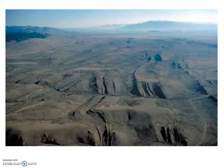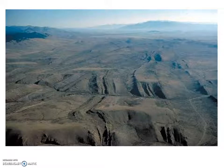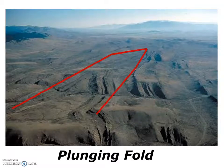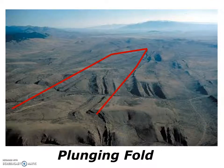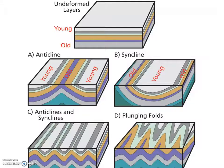Here in this image we see an eroded surface of the earth. Note the outcrop pattern — would you expect this to be a plunging or a non-plunging fold? It's a plunging fold, as you can see by the U-shaped outcrop pattern.